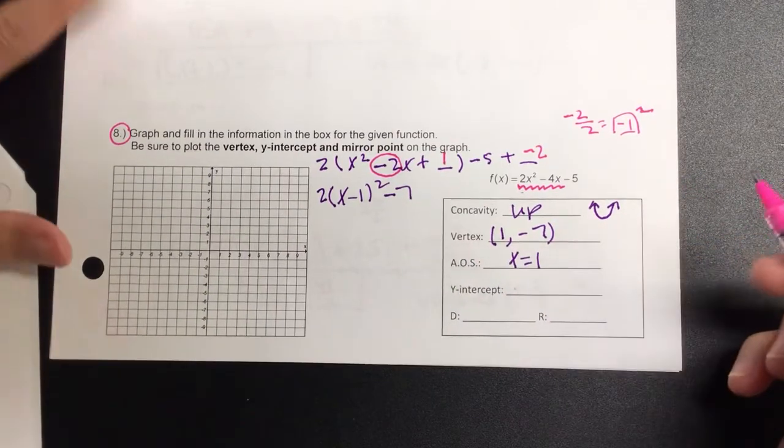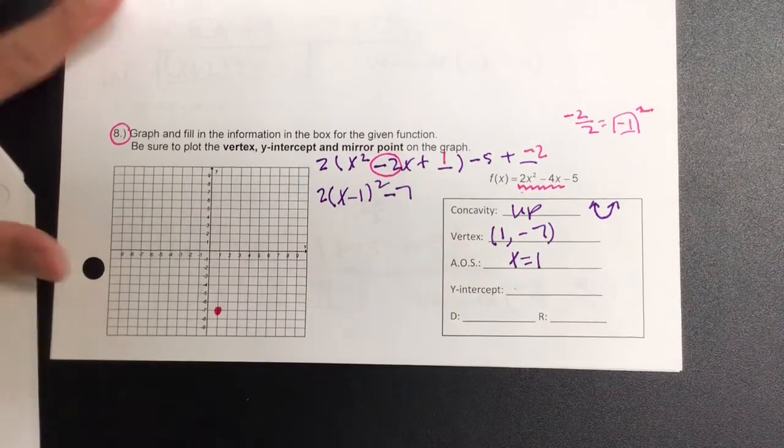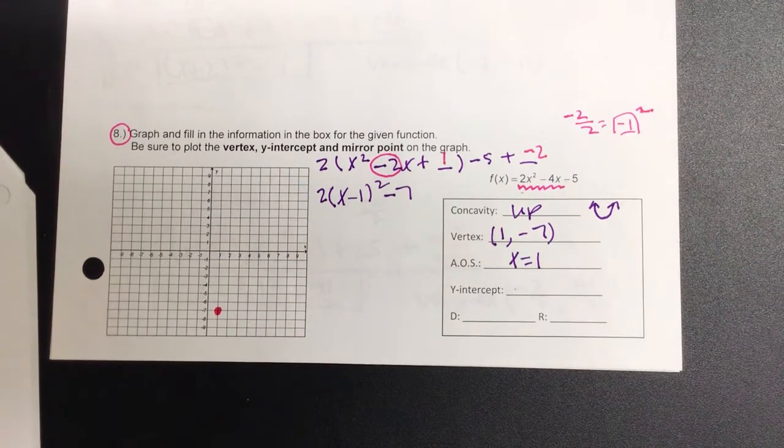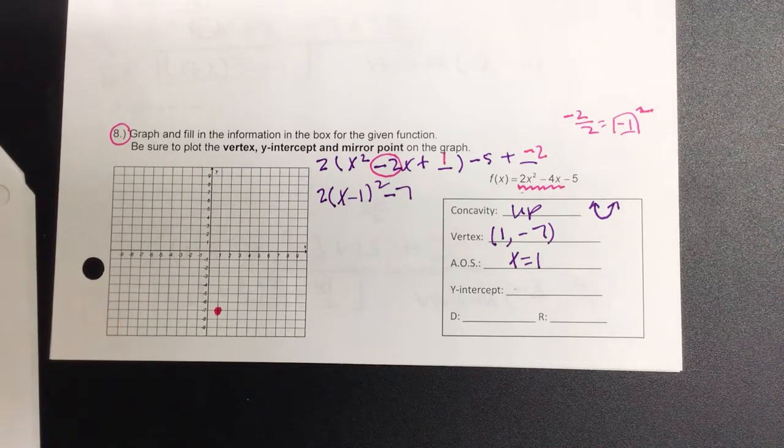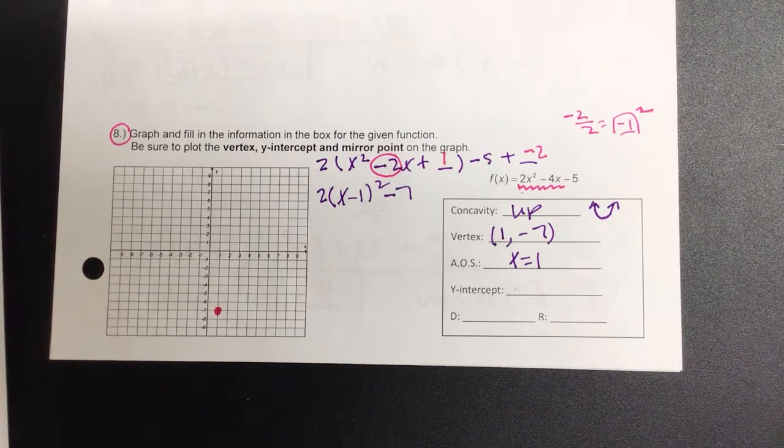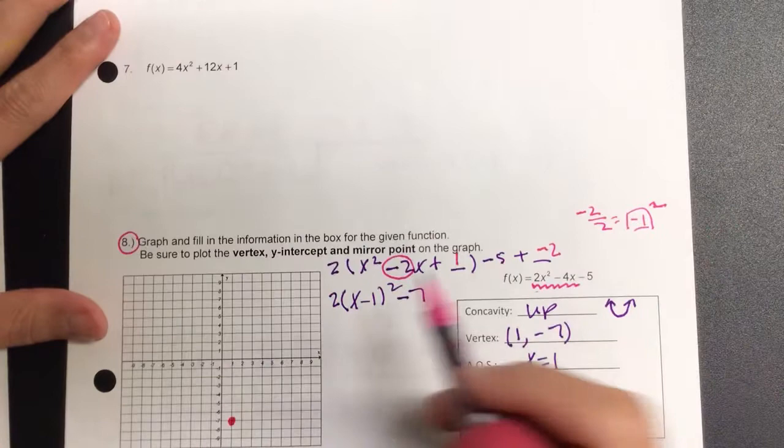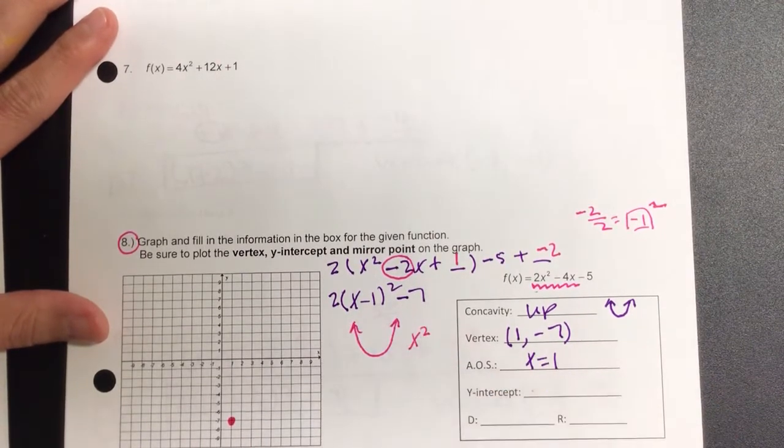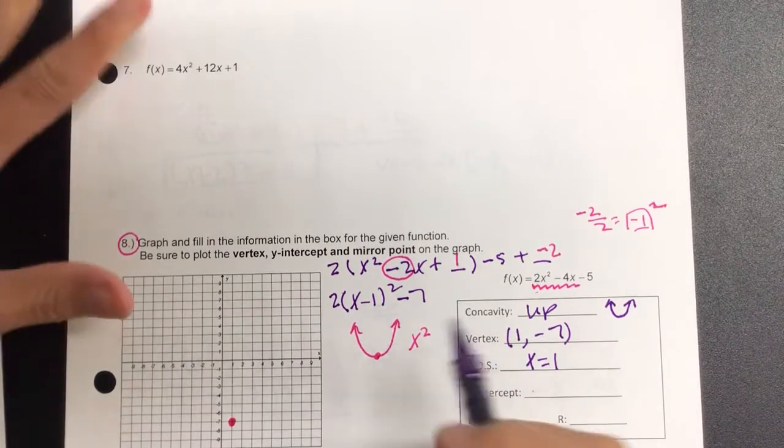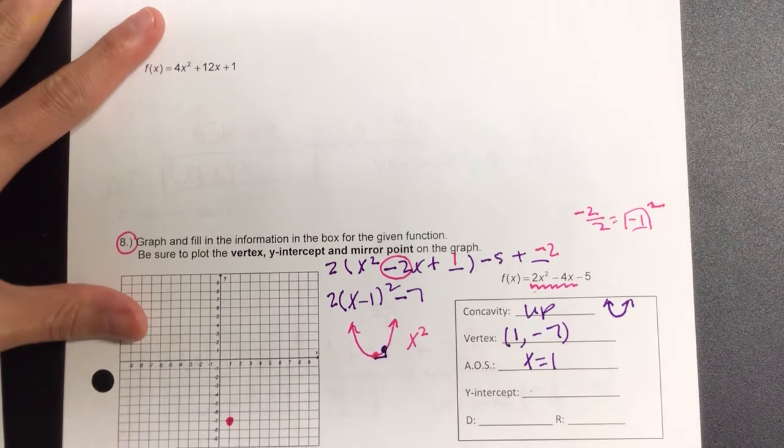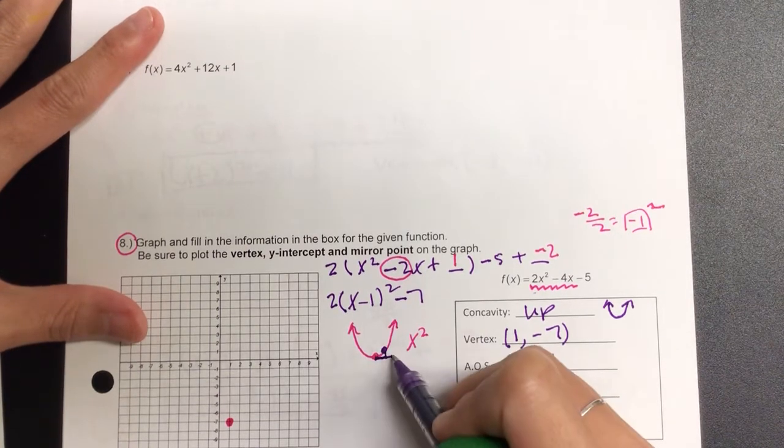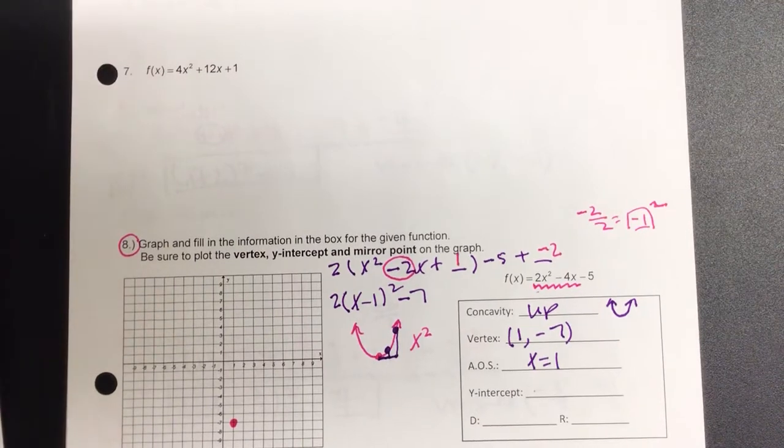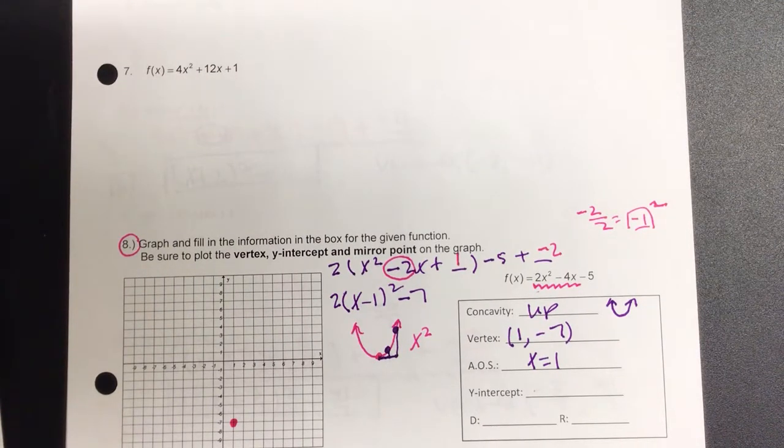So let's go ahead and plot the vertex. 1 negative 7. And I think I want to show you guys a trick. Everyone ready? Kind of? Okay. On our y-intercept. Okay. When y'all had your normal x squared from the vertex, when you went to the right one, it also went up one. But did you also know when you went to the right two, it went up four? Yes. Because one squared is one. Two squared is four. One, one, two, four. Right? Whoa.